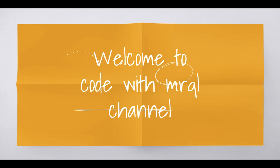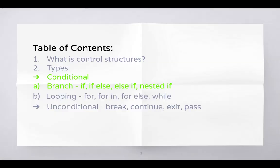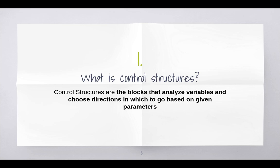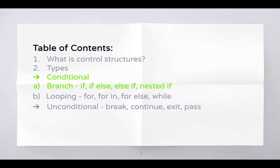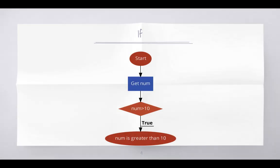Welcome to Coded Miracle channel. Today we are going to learn control structures. Control structures are blocks that analyze variables and choose a direction to go based on given parameters. We have two different types: conditional and unconditional. In conditional, we have two different types: branch and looping. In this video we are going to learn branch types — if, if-else, else-if, and nested if.